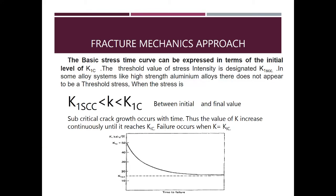Fracture mechanics approach: The basic stress-time curve can be expressed in terms of the initial level of K1c. The threshold value of stress intensity is designated K1scc. In some alloys, like high-strength aluminum alloys, there does not appear to be a threshold stress. When the stress is between K1scc and K1c, subcritical crack growth occurs with time. Thus, the value of K increases continually until it reaches K1c.